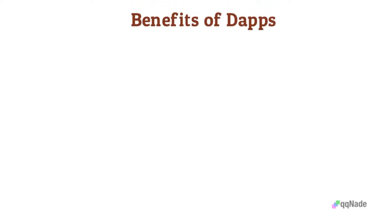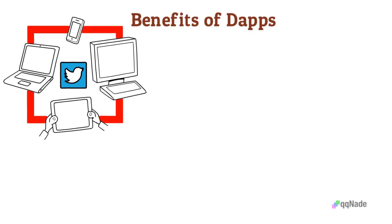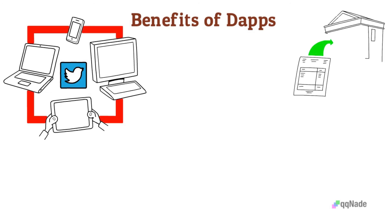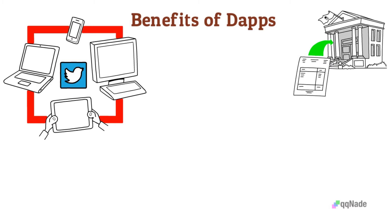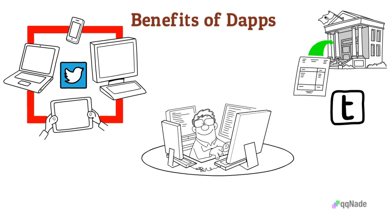So what are the benefits of dApps? First of all, dApps are resistant to censorship. Many apps like Twitter have a single point of failure because they are controlled by a central authority, meaning they could easily be shut down. For instance, if the government wanted to shut down Twitter, it would only require shutting down Twitter's central servers. A decentralized app, on the other hand, runs on multiple computers within a network. Shutting down a few computers won't harm the network since it runs on multiple nodes.